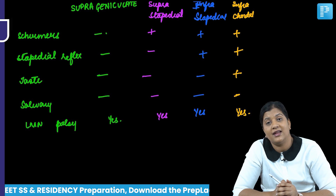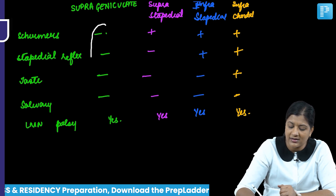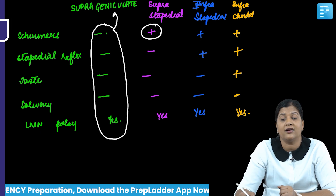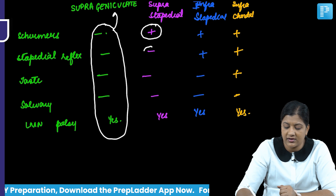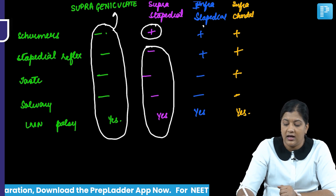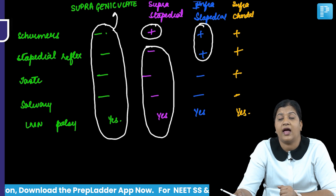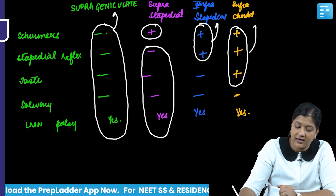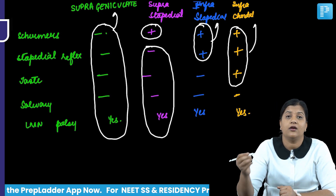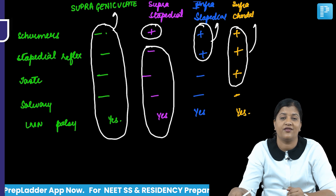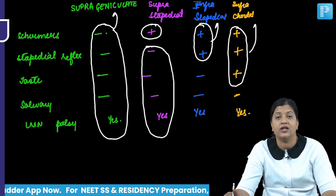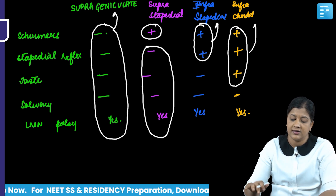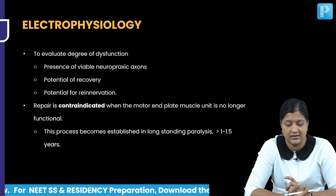To summarize topodiagnosis: all tests negative with LMN facial palsy = supra-geniculate lesion. Lacrimation preserved but rest negative = supra-stapedial. Lacrimation and stapedial reflex preserved = infra-stapedial. Lacrimation, stapedial reflex, and taste preserved = infra-chordal. This topological localization helps focus management of the patient.